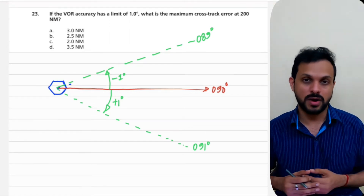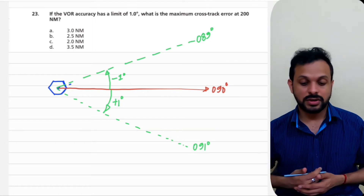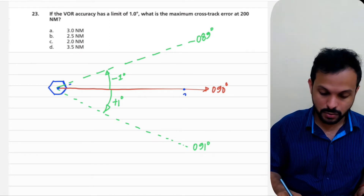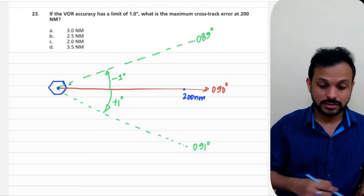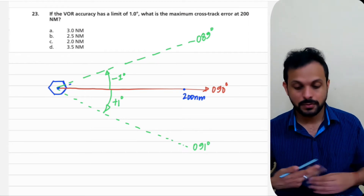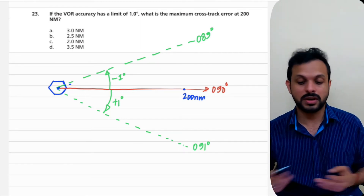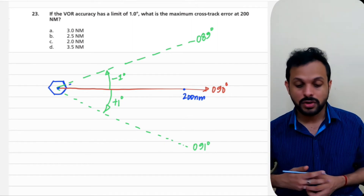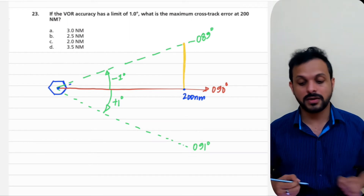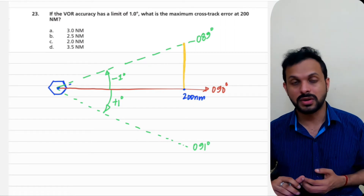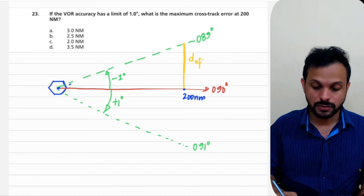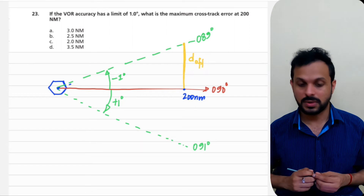You're asked to find the maximum cross-track error at 200 nautical miles. So let's navigate from the VOR out to 200 nautical miles. The cross-track error means: if you're supposed to be on the 090 radial but end up on 089 or 091, what is your distance from the required track? That maximum distance you could possibly be, while still within the VOR accuracy limits, is what we need to find.